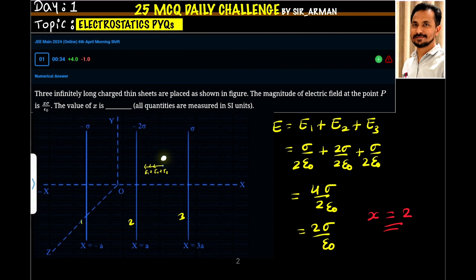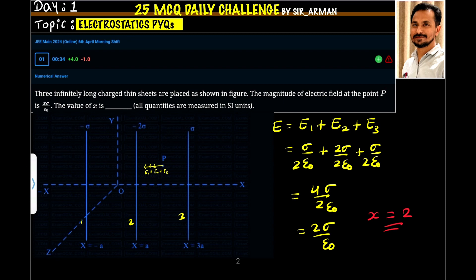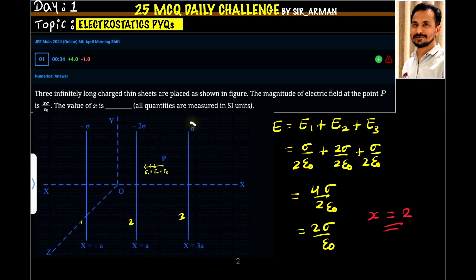Point P is lying between plate number 2 and plate number 3. The electric field due to plate number 1, which is negatively charged, points towards plate number 1. Similarly, the electric field due to plate number 2 also points towards that plate because it is negatively charged. The electric field due to plate number 3, which is positively charged, points away from it. So at point P, the electric fields due to all three plates point in the same direction.